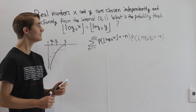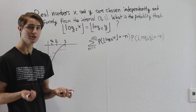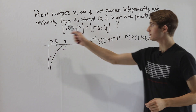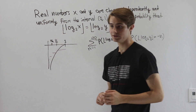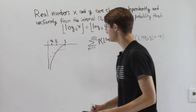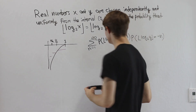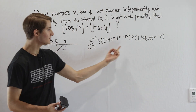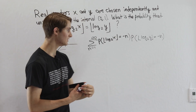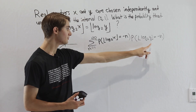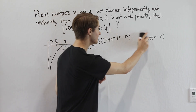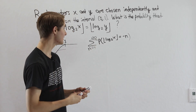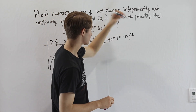Since x and y are both chosen independently and uniformly, they follow the same process. So the probability that this statement is true for x is the same as the probability it is true for y. We can write the sum as the probability that the floor of log base 2 of x equals negative n, squared.